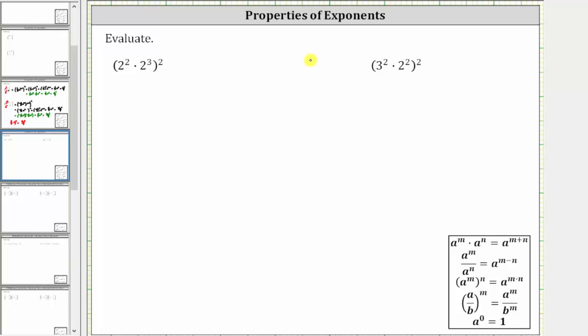We want to evaluate the given expressions. Looking at the first expression, following the order of operations, we simplify inside the parentheses first. Inside the parentheses, we simplify the exponents before we multiply.